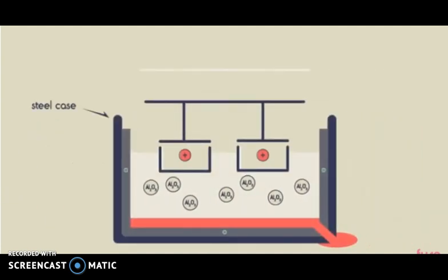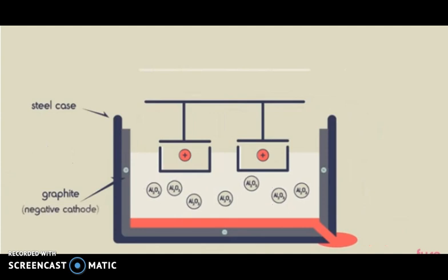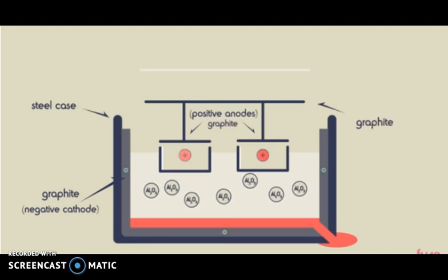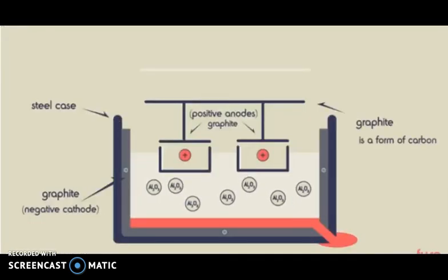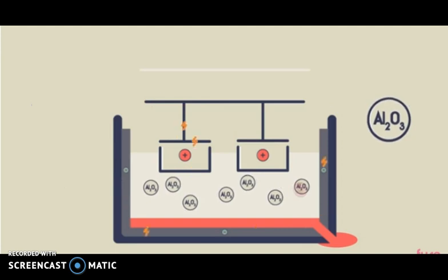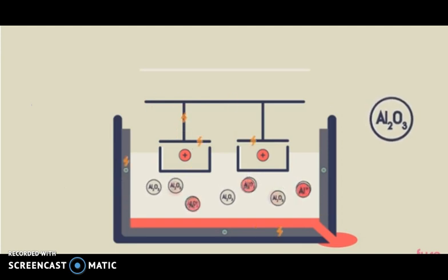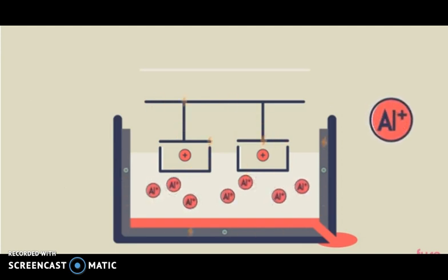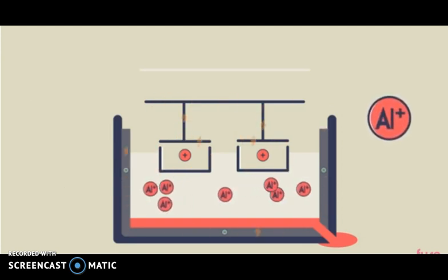The steel case is coated with graphite, providing a negative cathode. The positive anodes are immersed in the molten cryolite and are also made of graphite. Remember that graphite is a form of carbon. When electricity flows, aluminium from the aluminium oxide in the cryolite forms at the negative cathode.